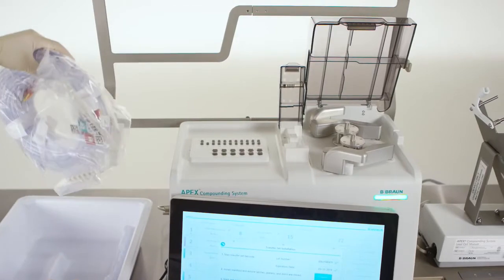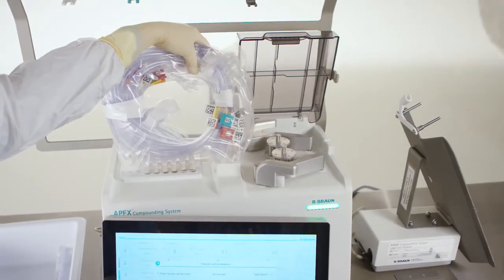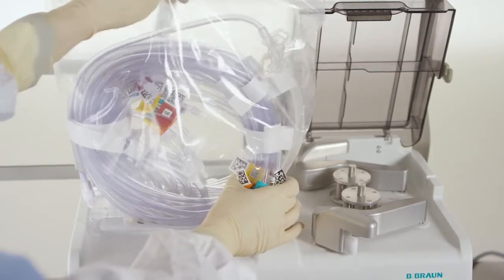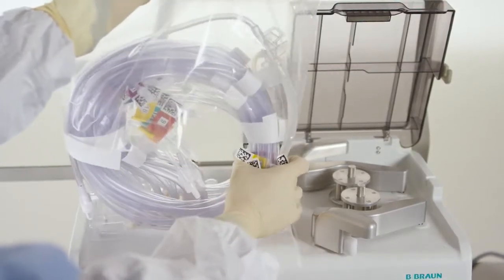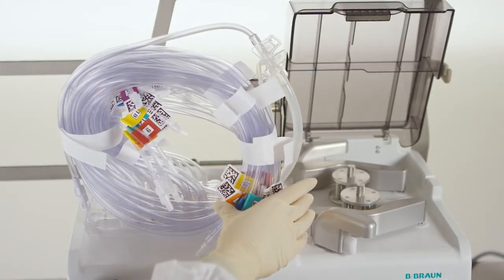Remove the transfer set by grasping it by the partial plastic sleeve designed to protect it from contamination. Ensure that the transfer set's tubes remain coiled, its caps remain in place, and no part of the transfer set touches anything outside of the laminar flow hood.